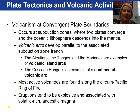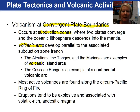I want to relate volcanic activity and plate tectonics now, starting with convergent plate boundaries. At a subduction zone where two plates are converging and the ocean crust is subducting into the mantle, we get what are called volcanic arcs. The Aleutian Islands, the Tongas, and the Marianas are examples of volcanic island arcs. The Cascade Range is also a convergent plate boundary, but with ocean crust subducting beneath continental crust — we call that a continental volcanic arc.